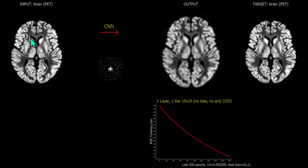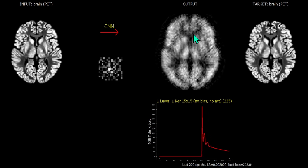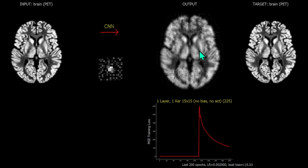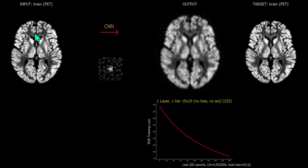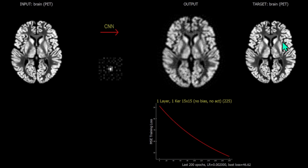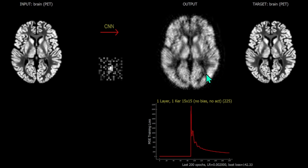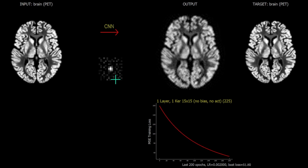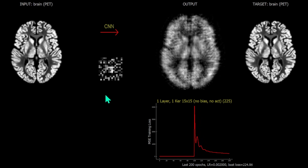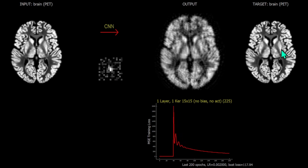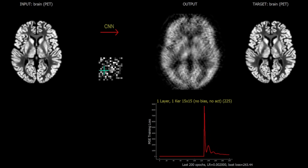The input image is on the left-hand side, and the kernel is run through the convolutional neural network — consisting of just that single kernel — to deliver the output shown here. In the training process, this output is compared to the target using a mean square error loss function, and the optimizer then seeks to update the 15 by 15 convolution kernel accordingly.